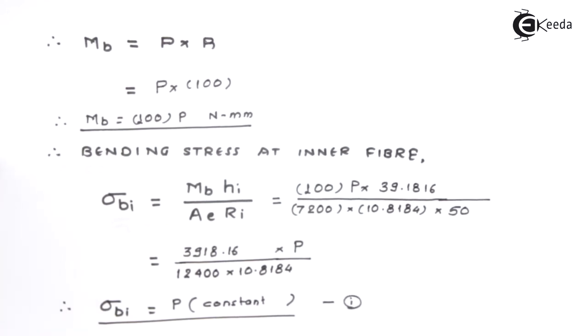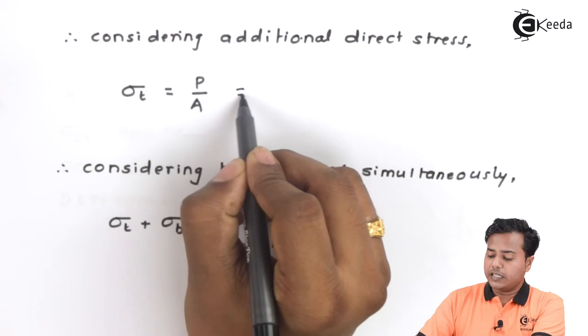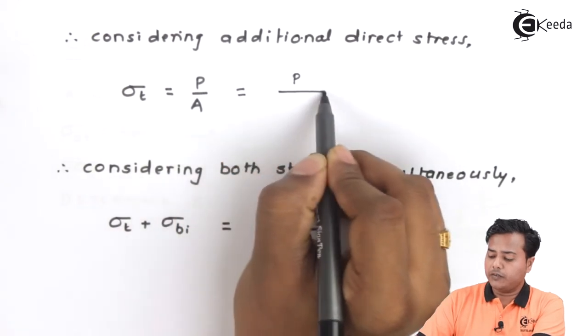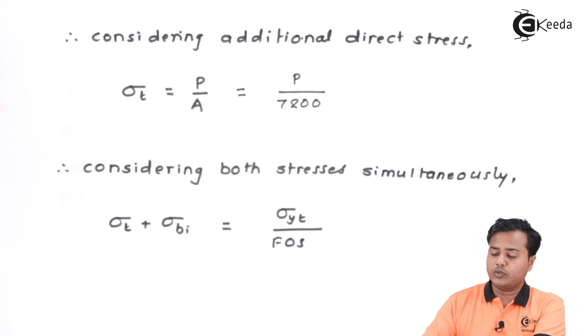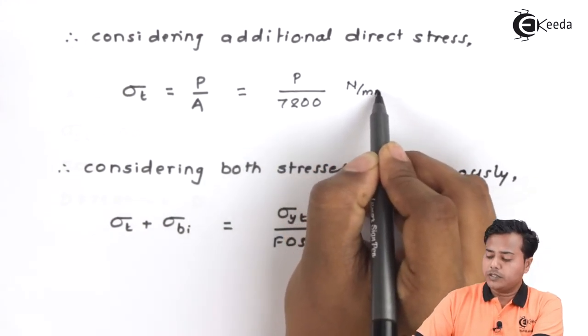This is my first expression that I have got. Let's proceed ahead with the additional stress that is the direct stress. The direct stress in our case becomes P divided by area of cross section, which is 7200 Newton per millimeter square.